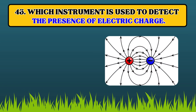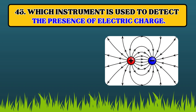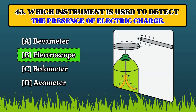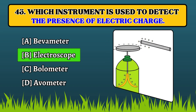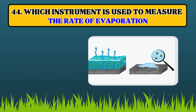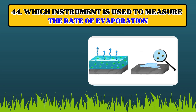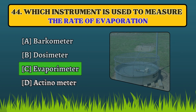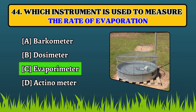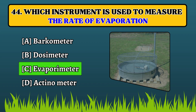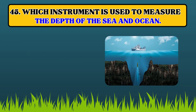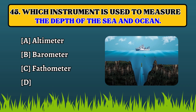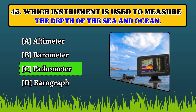Which instrument is used to detect the presence of electrical charge? Electroscope. Which instrument is used to measure the rate of evaporation? Evaporimeter. Which instrument is used to measure the depth of the sea and ocean? Fathometer.